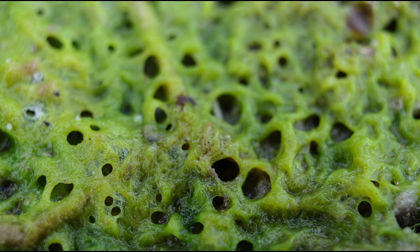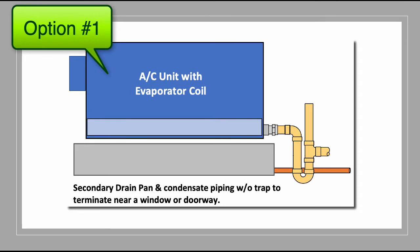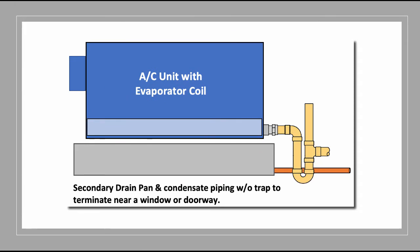Below are some possible solutions, but always check your local code for the approved method. Option one would be to have a secondary drain pan with drain piping going to an observable area — you'd want it to drip in front of a window or in a doorway so that the occupants would know that the primary drain is clogged and has overflowed into the secondary drain pan.